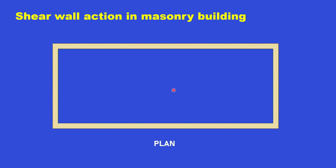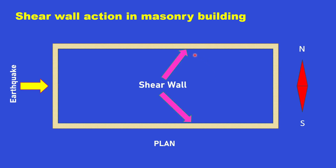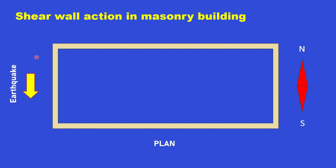Considering a masonry shear wall plan: suppose the north-south direction is as marked and an earthquake takes place from the east-west direction. The walls parallel to the earthquake direction are called shear walls. The other two walls are not shear walls for that loading direction. When the earthquake takes place from the north-south direction, the left and right walls become the shear walls per our terminology.